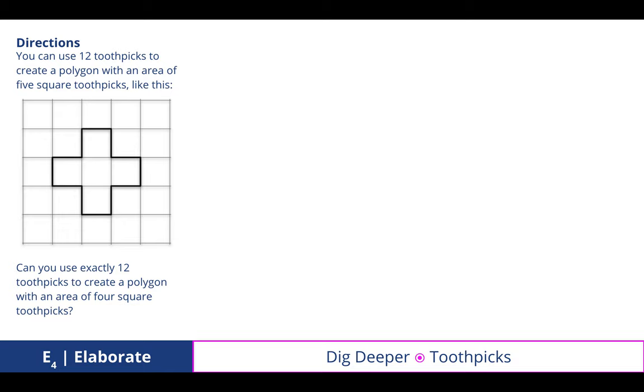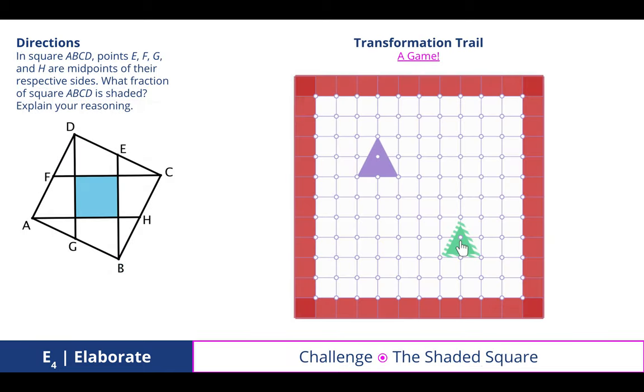Dig deeper. Then we looked at this activity in which we have the larger square A, B, C, and D, where we have the midpoints E, F, G, and H. A lot of review here, right? We see some of these smaller triangles, but it's asking what fraction of the square, A, B, C, D, is shaded, which we see one smaller square shaded within that.